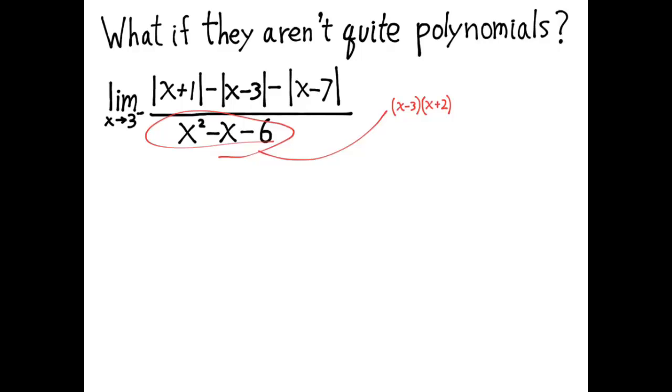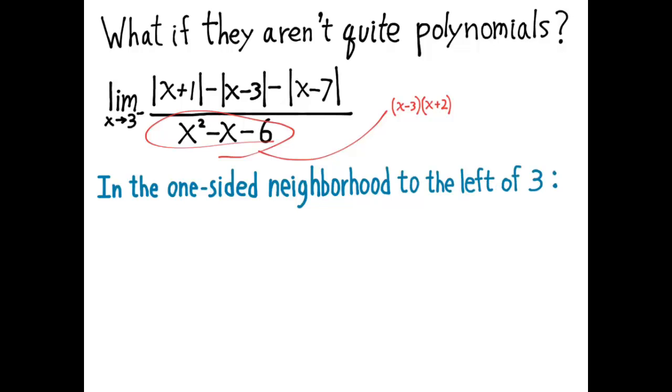The reason it's not so difficult is that the limit expression describes what happens in a neighborhood. And if we're talking about the neighborhood that's immediately to the left of 3, the one-sided neighborhood to the left of 3, the places where x is something like 2.999,